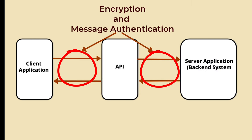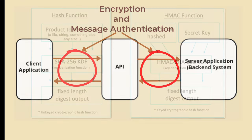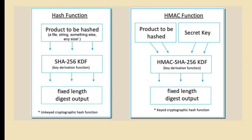To prevent data interception or tampering, encrypting data in transit using HTTPS is essential. This ensures that data exchange between the client and the API is encrypted and cannot be easily intercepted or tampered with by attackers. Additionally, implementing message integrity checks using Hash-based Message Authentication Code, HMAC, can help verify that the data has not been altered during transmission. HMAC is a cryptographic technique that uses a secret key and a hash function to verify the authenticity and integrity of a message, and is more secure than a standard Message Authentication Code, MAC, because the key and message are hashed separately.